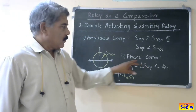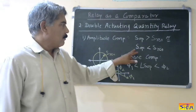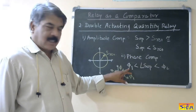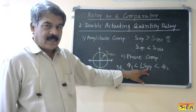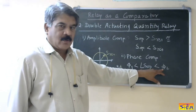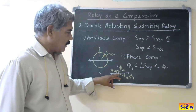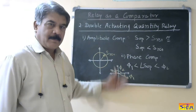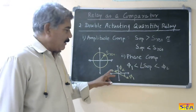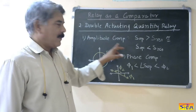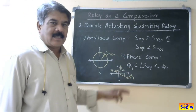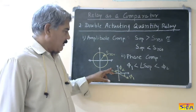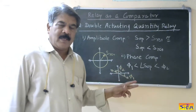Next is the phase comparator. Phase comparators compare only the phase angle of both the restraining quantity and the operating quantity. The condition is: the phase angle phi-1 is less than the phase angle of the operating quantity with respect to the reference quantity, which is less than phi-2 — then the relay will operate. In the complex plane, considering phi-1 and phi-2, the region above this range is the operating region. An example is the directional relay. So the directional element has a straight-line characteristic. If it is an amplitude comparator, the characteristic is a circle; if it is a phase comparator, the characteristic is a straight line. If the addition of the two angles is 180 degrees, it is a single straight line; otherwise, there is one straight line in each quadrant.